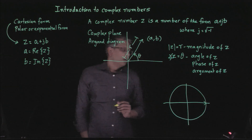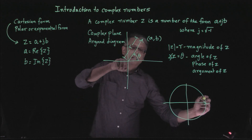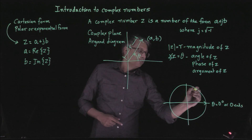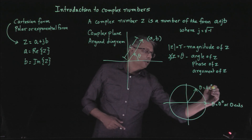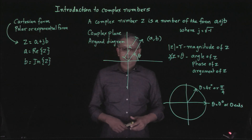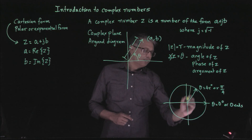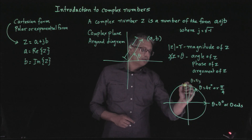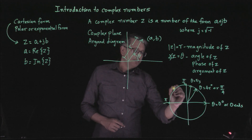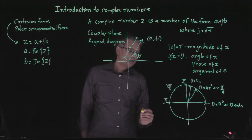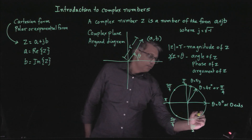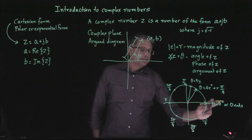A complex number on the positive x-axis corresponds to an angle of 0 radians. Going counterclockwise: 45 degrees is pi over 4, 60 degrees is pi over 3, 90 degrees is pi over 2, 180 degrees is pi, then 3 pi over 4, 5 pi over 4, 3 pi over 2, 7 pi over 4, and 2 pi which is the same as 0 degrees.